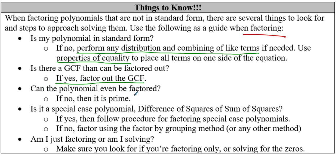Next: can it even be factored? Sometimes they can't. If you can't find two terms that multiply to make your C term that also add up to make your B term, then we have something that we call prime — so we just say prime or cannot be factored. Next, always look: do you have a special case polynomial? Remember those difference of squares or sum of squares? Being able to identify those is going to help you factor quickly and completely. If yes, follow the procedure for those special cases. If you remember the tricks, they're actually really easy to do. If not, then just go ahead and start factor by grouping or maybe some other method. Remember, the internet has tons of different videos that you can find to help you with factoring.